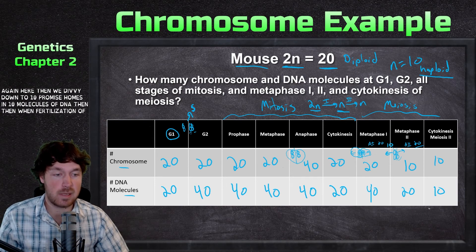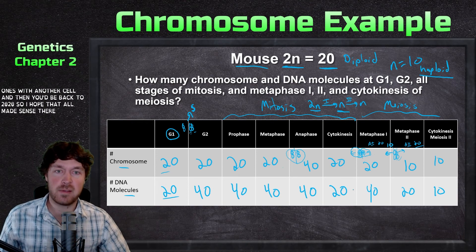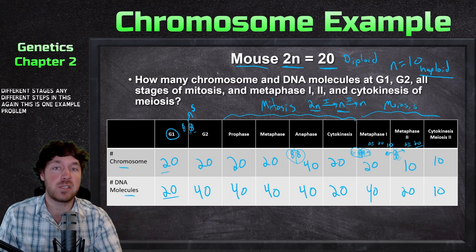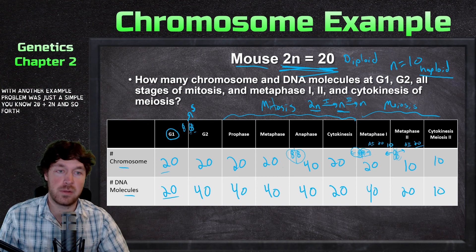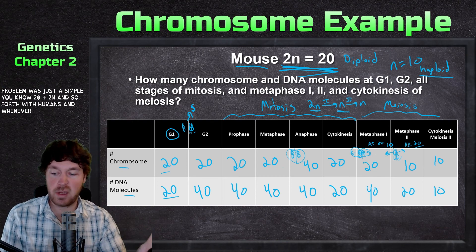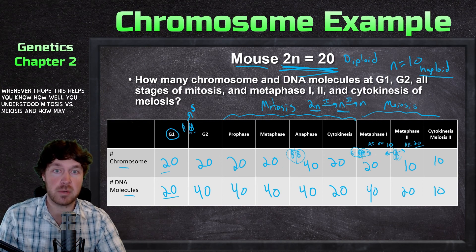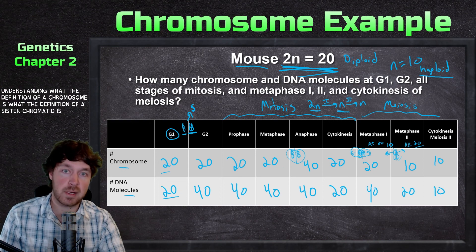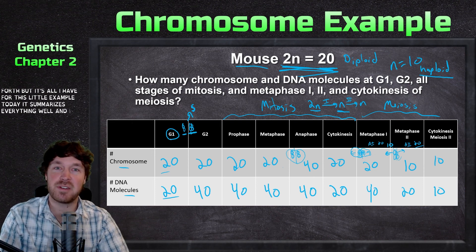When fertilization occurs, let's say this cell combines with another cell — you'd be back to 20 chromosomes and 20 DNA molecules. Feel free to comment or ask questions about any different stages or steps. This is one example problem — you could do this with any organism, like humans. The big thing is understanding the definition of a chromosome, sister chromatid, and homologous pairs. Hope this summarized everything well — see you all next time!